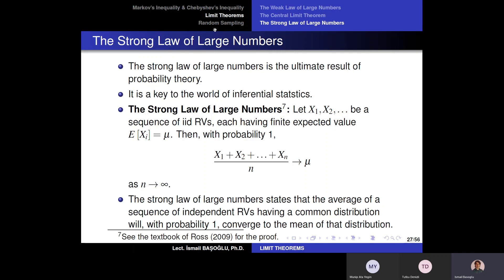Now, finally, at the end of the limit theorems, I am going to explain the strong law of large numbers. The strong law of large numbers is the ultimate result of probability theory.